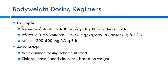Weight-based dosing using mg/kg is the most common approach for neonates and infants. For example, dosing might be 20 to 30 mg/kg/day divided every 12 hours for neonates, or 25 to 50 mg/kg for infants. This approach already accounts for differences in development, metabolism, and drug handling at different ages.